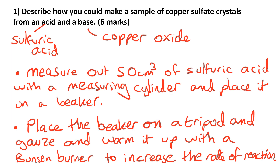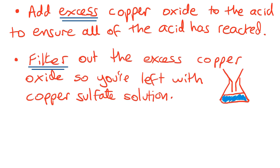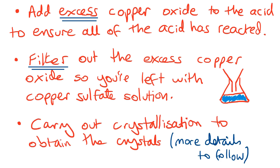In other words it's going to speed up the reaction. We then need to add excess copper oxide to the acid to ensure all of the acid has reacted. Then we would filter out the excess copper oxide so you're left with the copper sulfate solution.